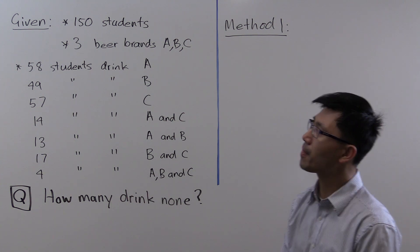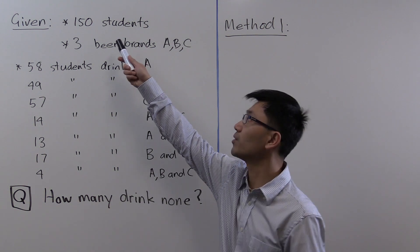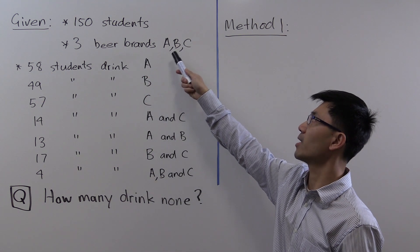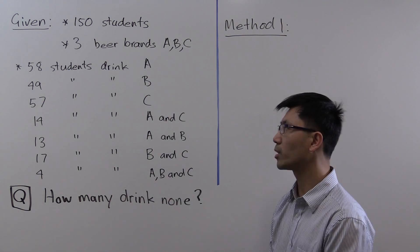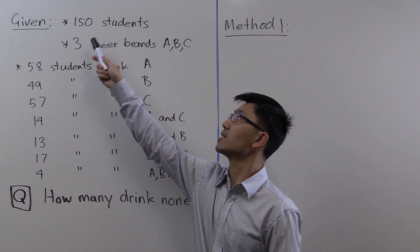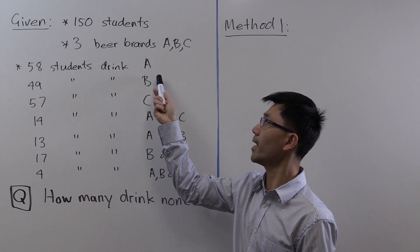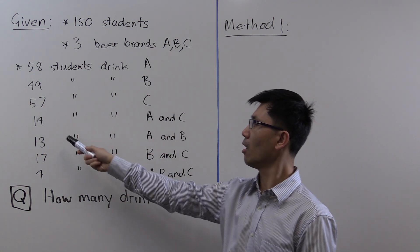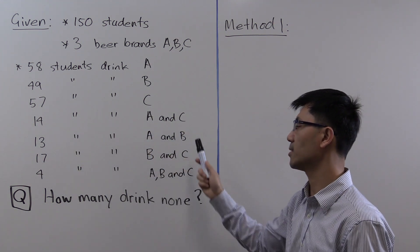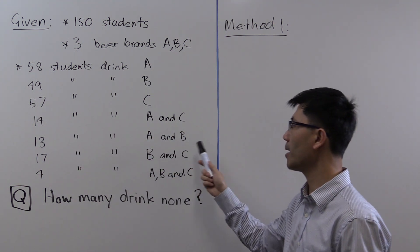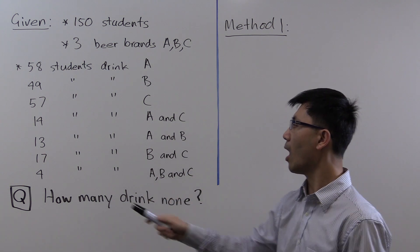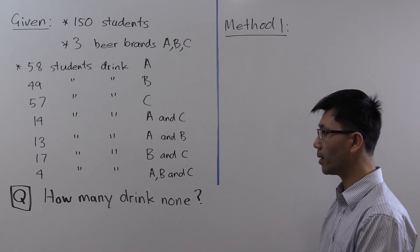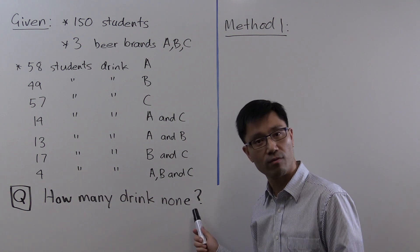Our question today looks at the following. We have 150 students drinking three beer brands: A, B, and C. We're given that 58 students drink brand A, 49 drink B, 57 drink C, 14 drink A and C, 13 drink A and B, 17 drink B and C, and 4 drink A, B, and C. The question asks us to determine how many drink none of these brands.